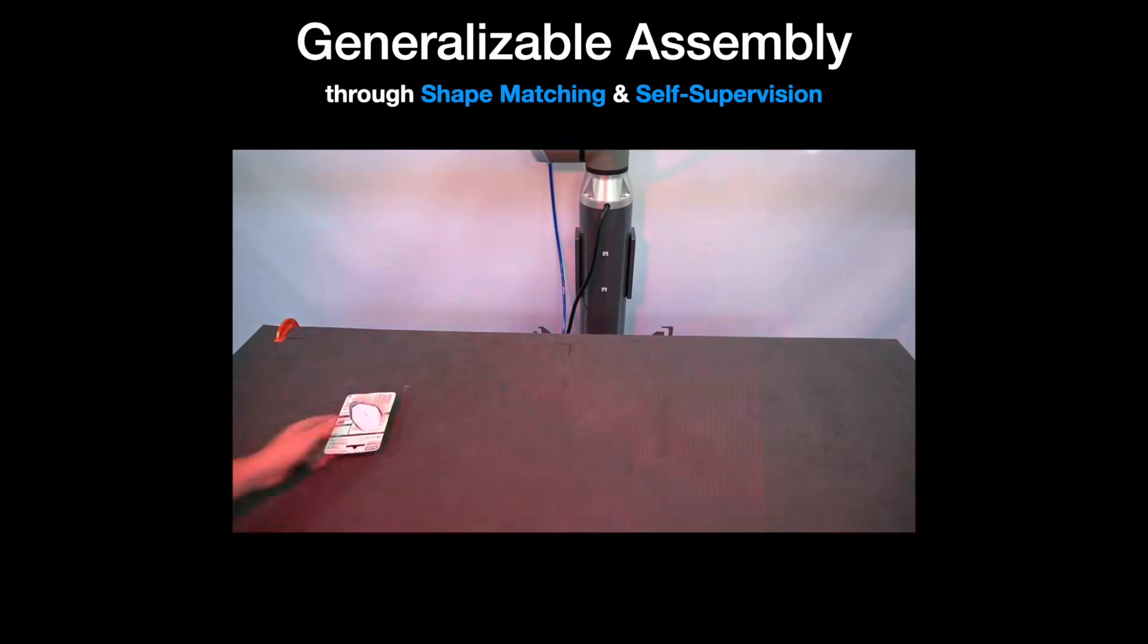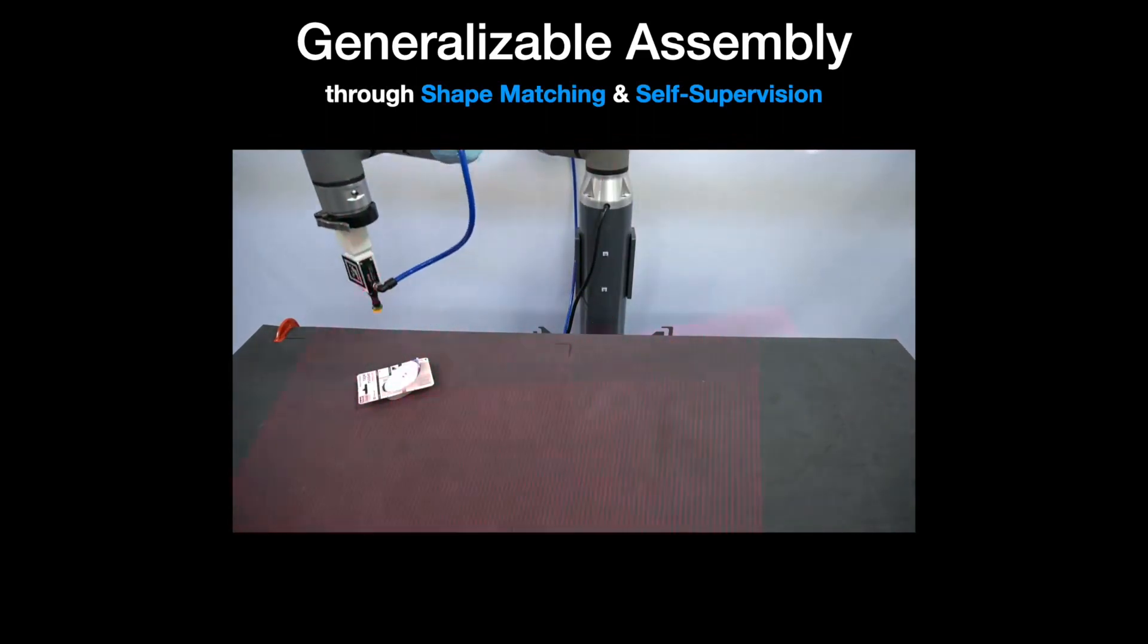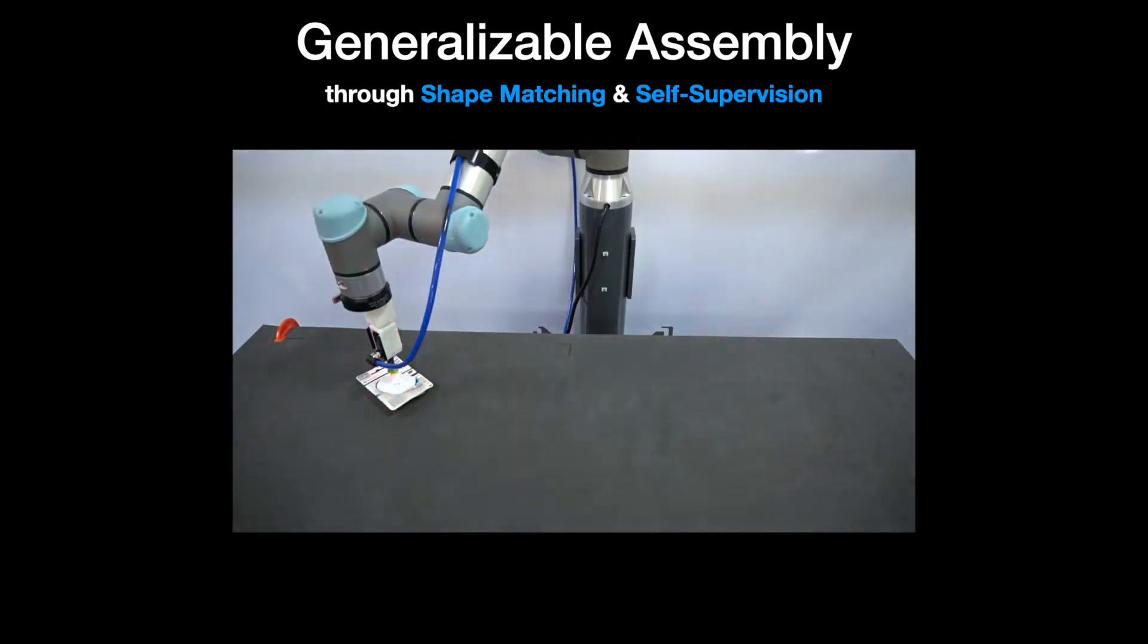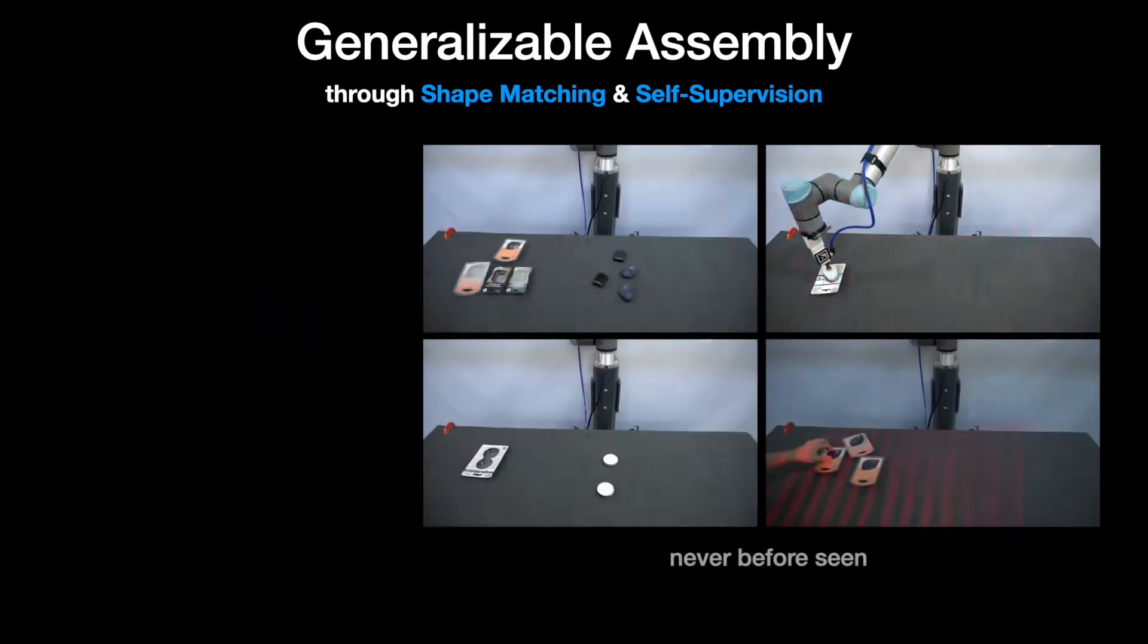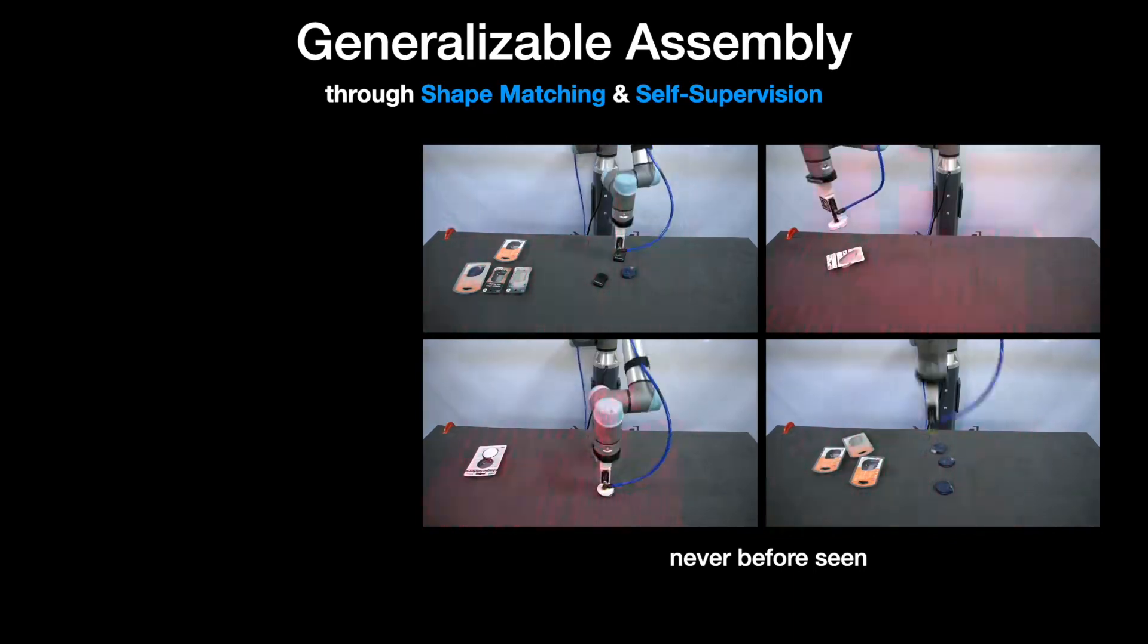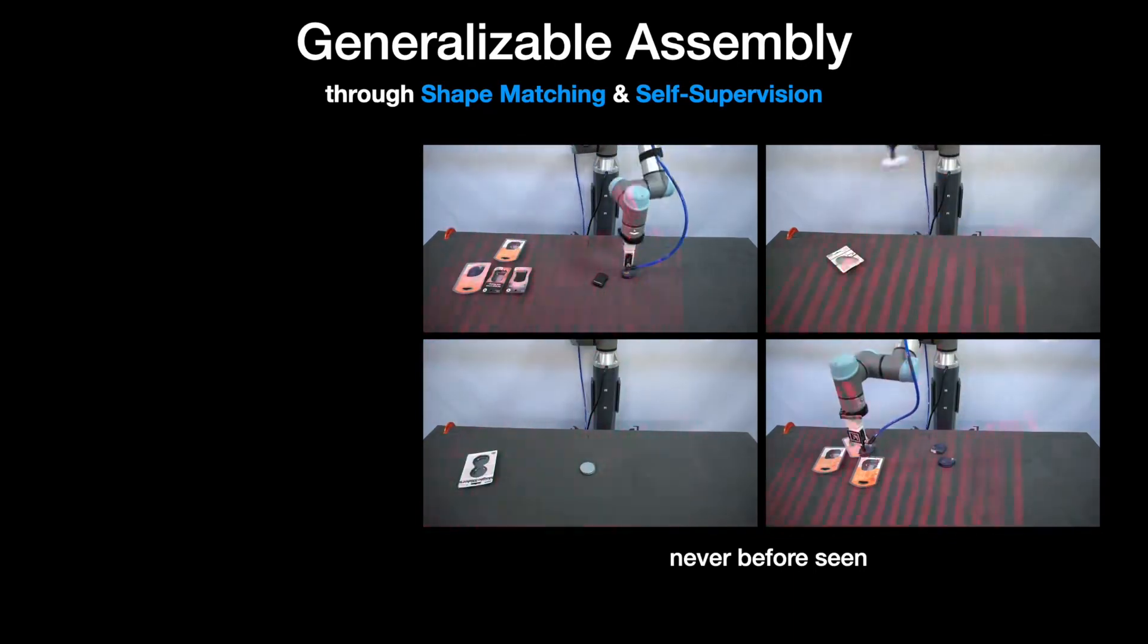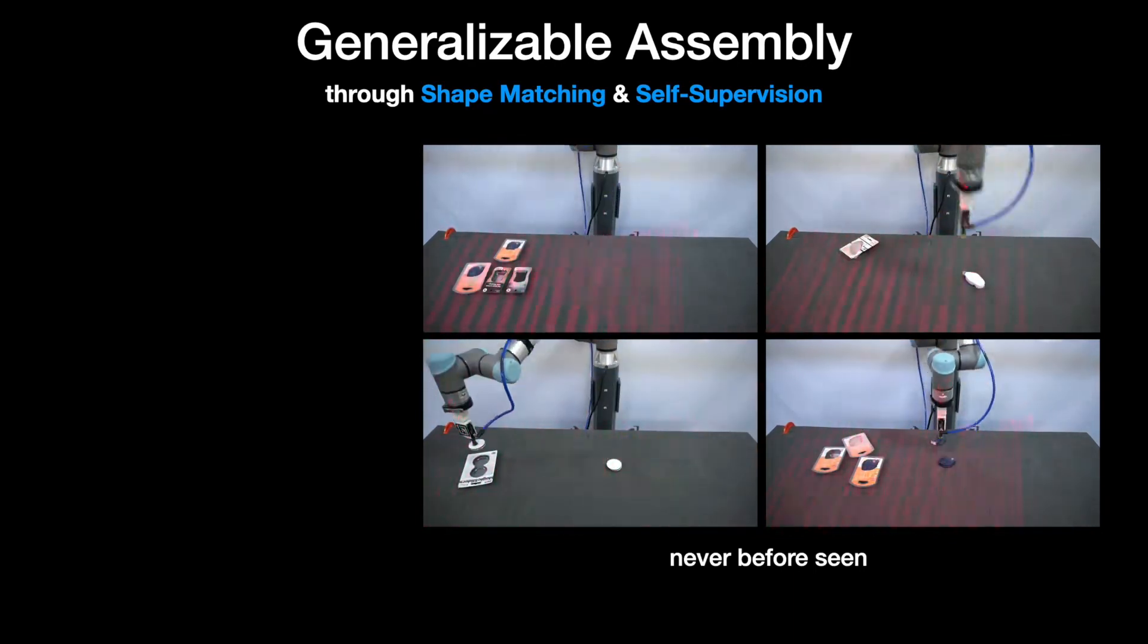Here is a demonstration of our system in action. It learns to use visual and geometric cues to establish correspondences between objects and their target placement locations. Because what it learns is a general matching function, our system is capable of immediately generalizing to new, unseen objects and tasks without any additional training data.